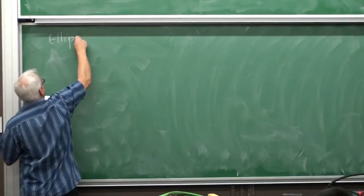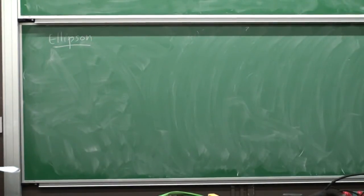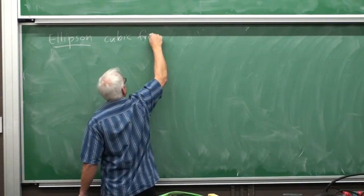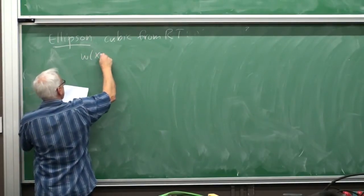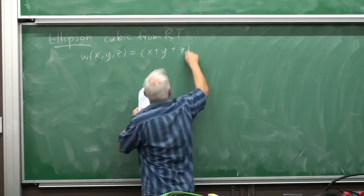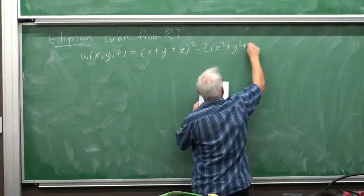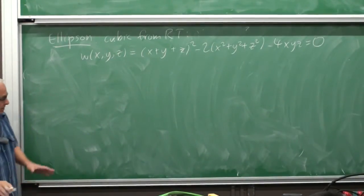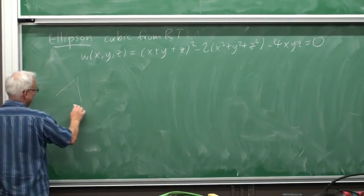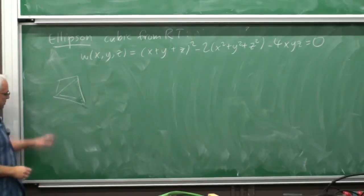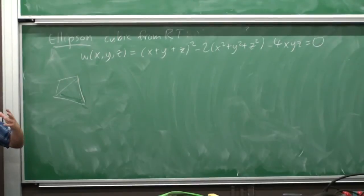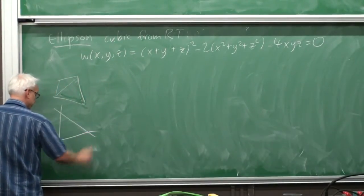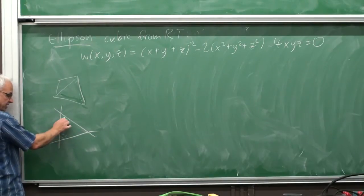The next example is the ellipson, a cubic surface from rational trigonometry. It's defined by: (x + y + z)² − 2(x² + y² + z²) − 4xyz = 0. It has a tetrahedral shape, a bit like a tetrahedron but rounded. Its significance is that if you take a triangle and look at the three spreads s₁, s₂, s₃ — where each spread sᵢ equals sin² of the corresponding angle — those three quantities satisfy this relation.